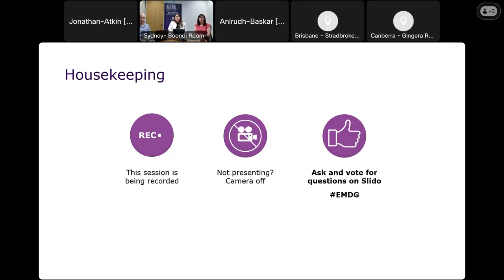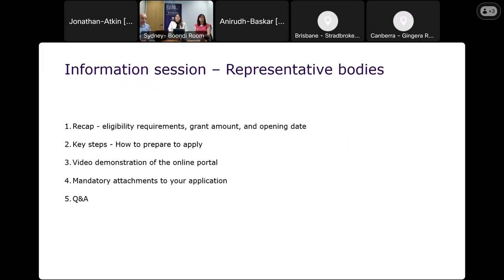This session is focusing on the representative body tier and we will be covering a number of topics, mostly focusing on the online portal and the online application form. We'll do a quick recap on eligibility requirements for representative bodies, the grant amounts and the opening date, then go through the key steps of how to prepare to apply. We also have a video demonstration of the online portal and application form, and will share tips around system requirements and mandatory attachments needed before applications open next week. We have set aside time for questions and answers at the end using Slido with the hashtag EMDG.